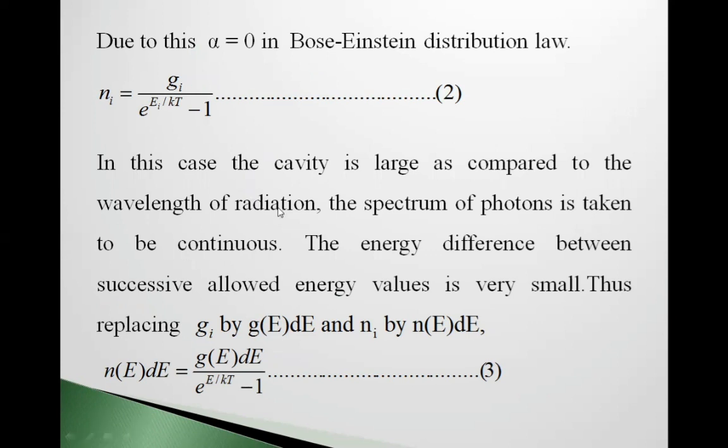Now, in this case, the cavity is large as compared to wavelength of radiation. The spectrum of photons is taken to be continuous. The energy difference between successive allowed energy values is very small. Thus, replacing gi by g(E)dE and ni by n(E)dE, we get n(E)dE equals g(E)dE upon e raised to E upon kt minus 1, equation 3.